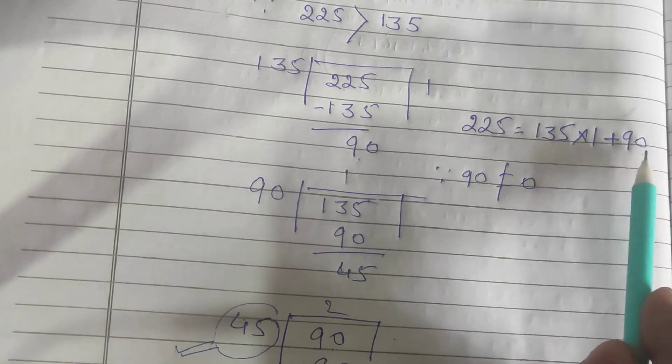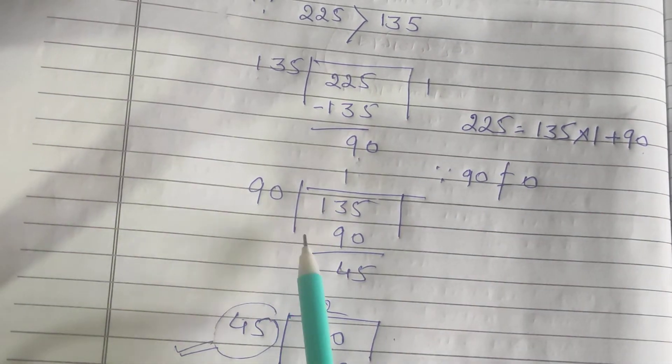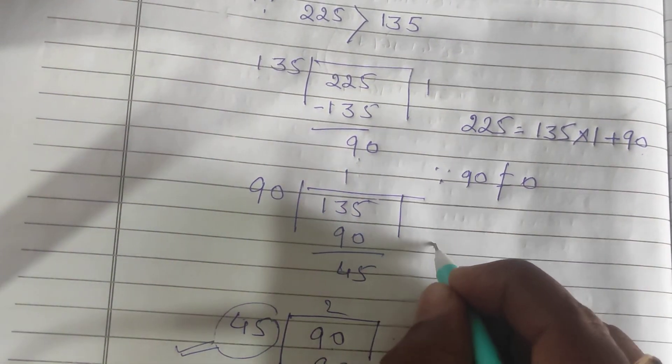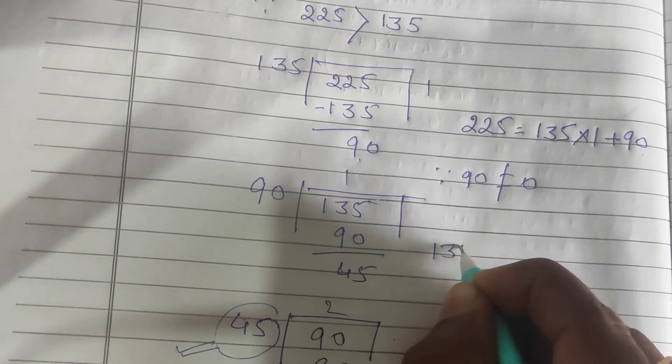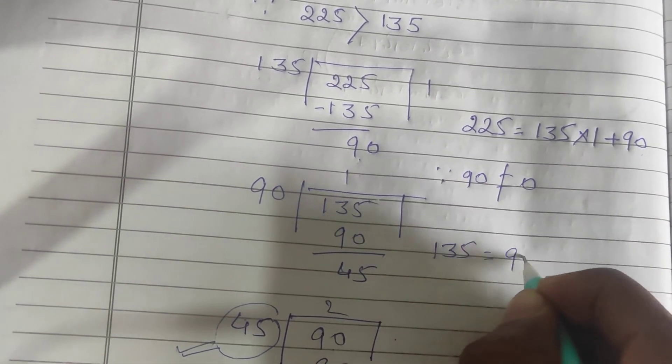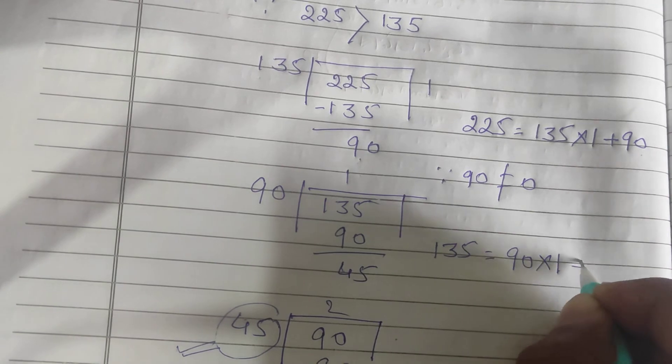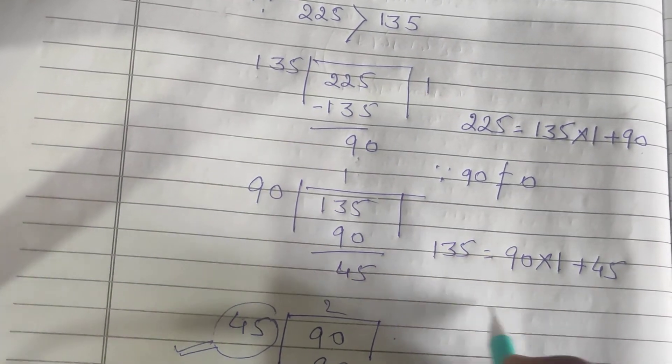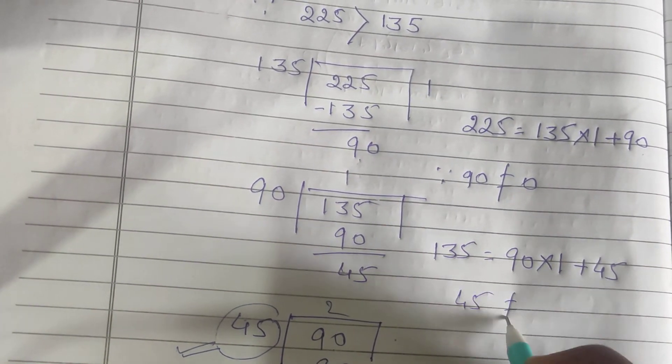We divide 135 by 90. What we got: 135 = 90 × 1 + 45. Again, remainder 45 does not equal 0.